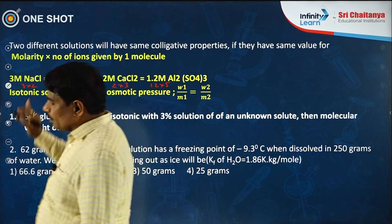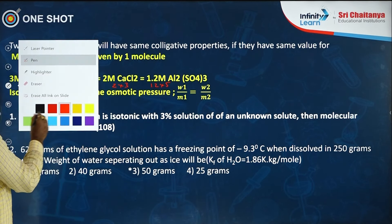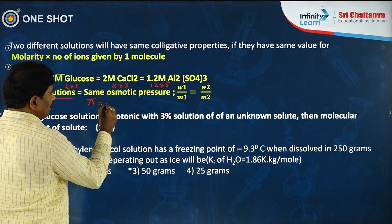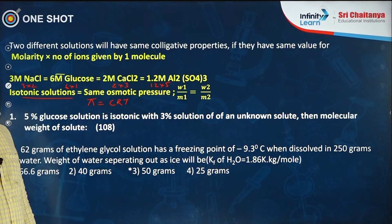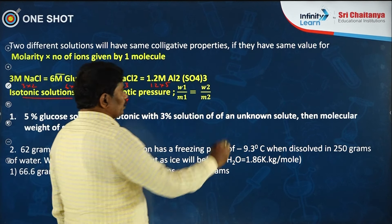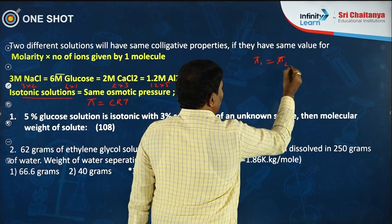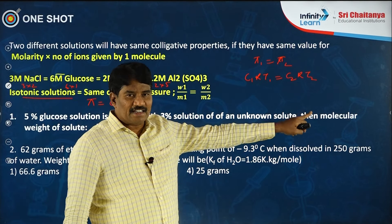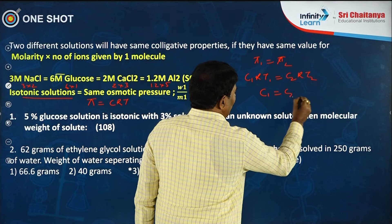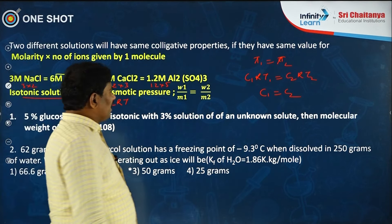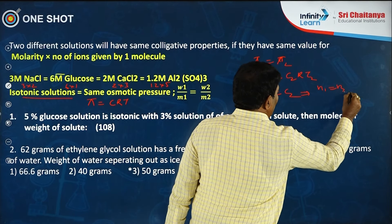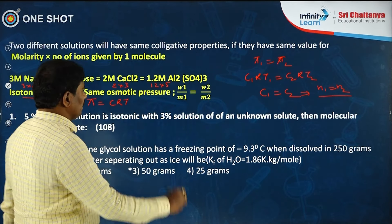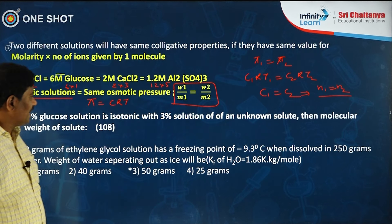Isotonic solutions are solutions with the same osmotic pressure. Osmotic pressure π = CRT. If π₁ = π₂ and temperature is the same, then C₁ = C₂, meaning n₁ = n₂ (moles of solute are equal). So W₁/M₁ = W₂/M₂. For example, if 5% glucose solution is isotonic with 3% solution of unknown solute, then 5/180 = 3/M₂, giving M₂ = 108 g/mol.